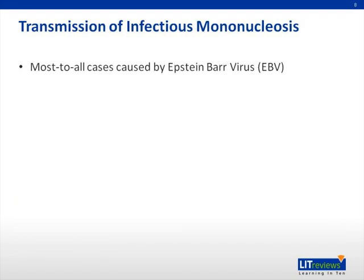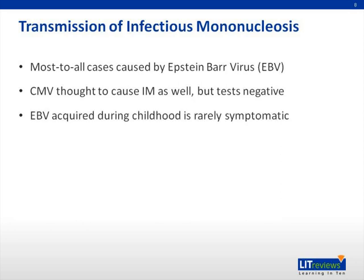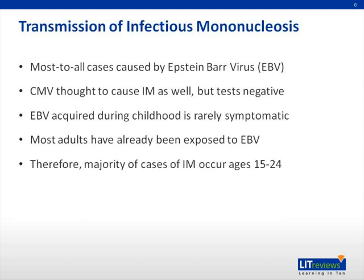Most to all cases of mono are caused by Epstein-Barr virus, or EBV. CMV can probably cause mono as well, but the tests right now are for EBV, making CMV mono difficult to diagnose. EBV is present in a large percent of the population, and people are often exposed as early as childhood. When patients are exposed in childhood, they rarely develop symptoms. Most adults have long since been exposed, and so the majority of cases of mono occur between the ages of 15 and 24.